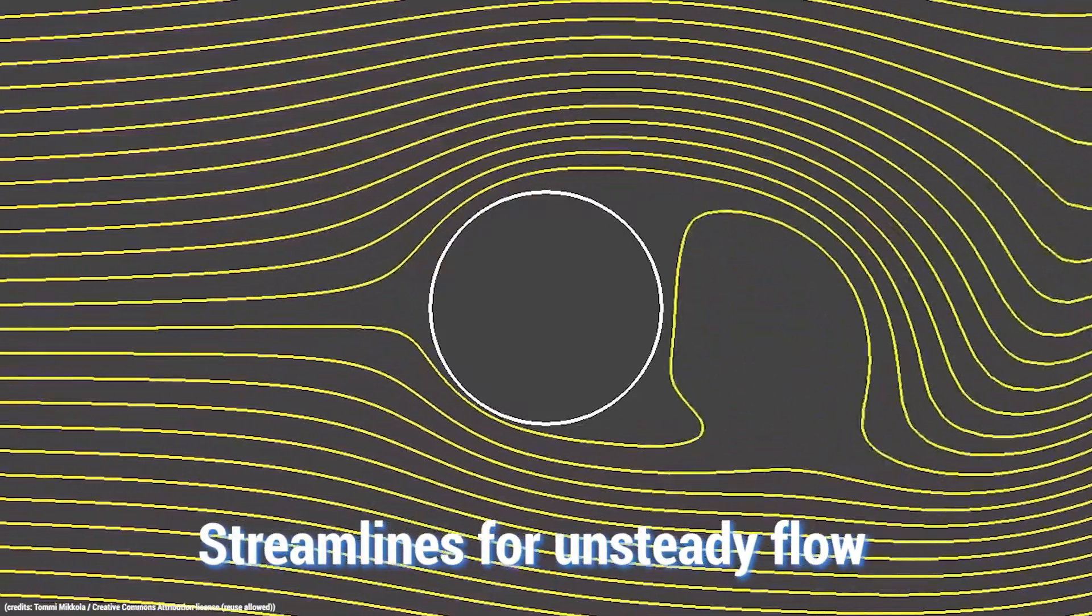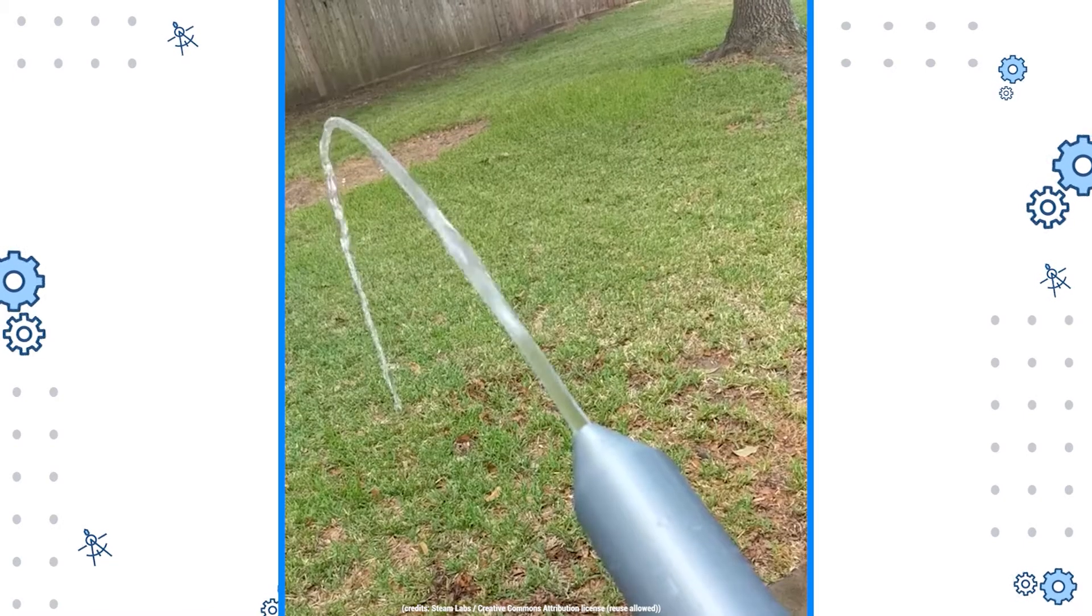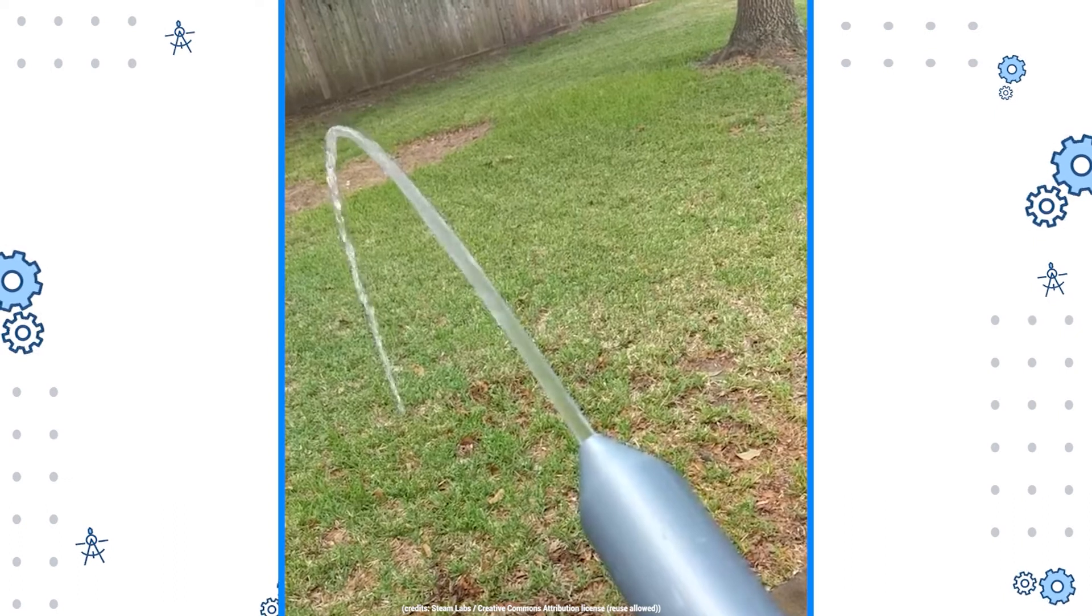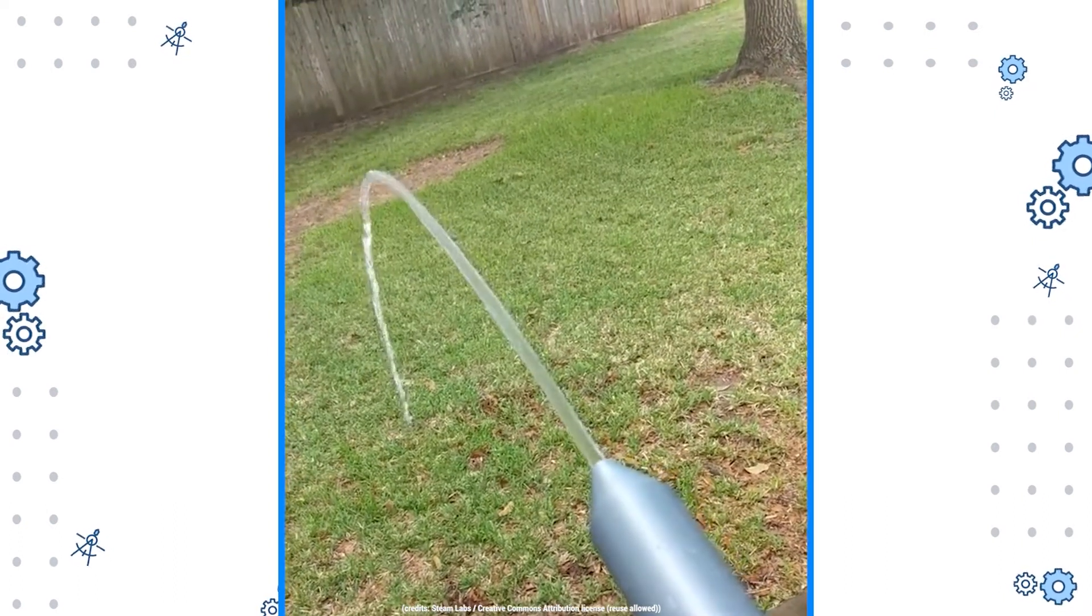Another type is laminar and turbulent flow. If the flow is such that the fluid particles move along in straight and parallel lines without crossing each other, then such a flow is called laminar flow.